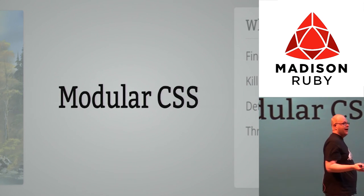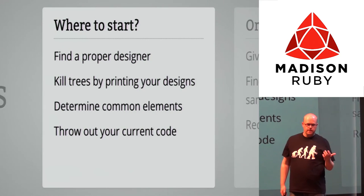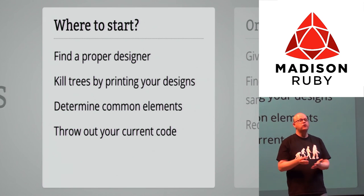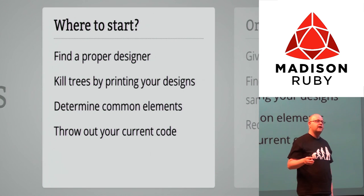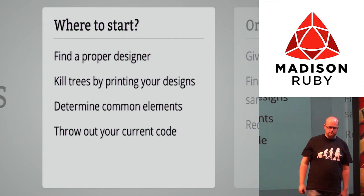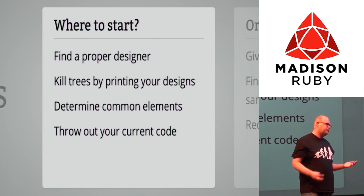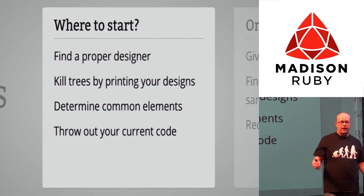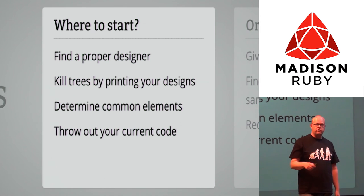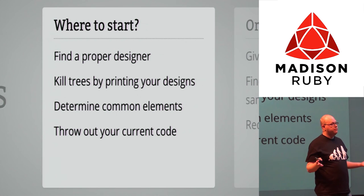Modular CSS — you have your HTML5 and it looks like crap, black and white. How do you handle modular CSS? First, find a designer who understands that you want to reuse things — not design three different pages with modules that are almost the same but not exactly. You need some uniformity. What I like to do is print out all my designs, put them on the wall, look at the first one, look at the second one, take a sharpie, and cross out any module that's already on the first page. In the end you have a collection of unique modules.